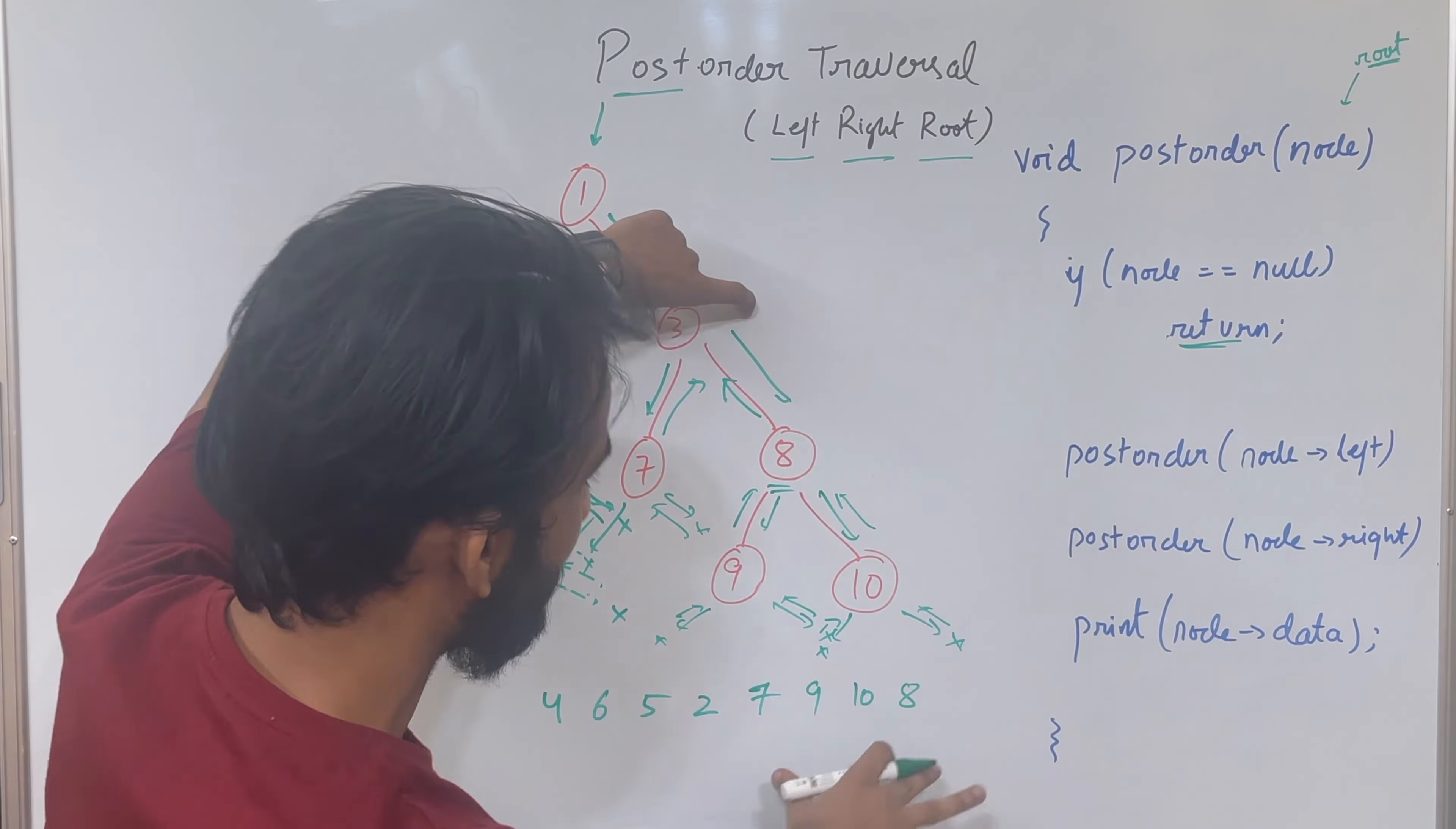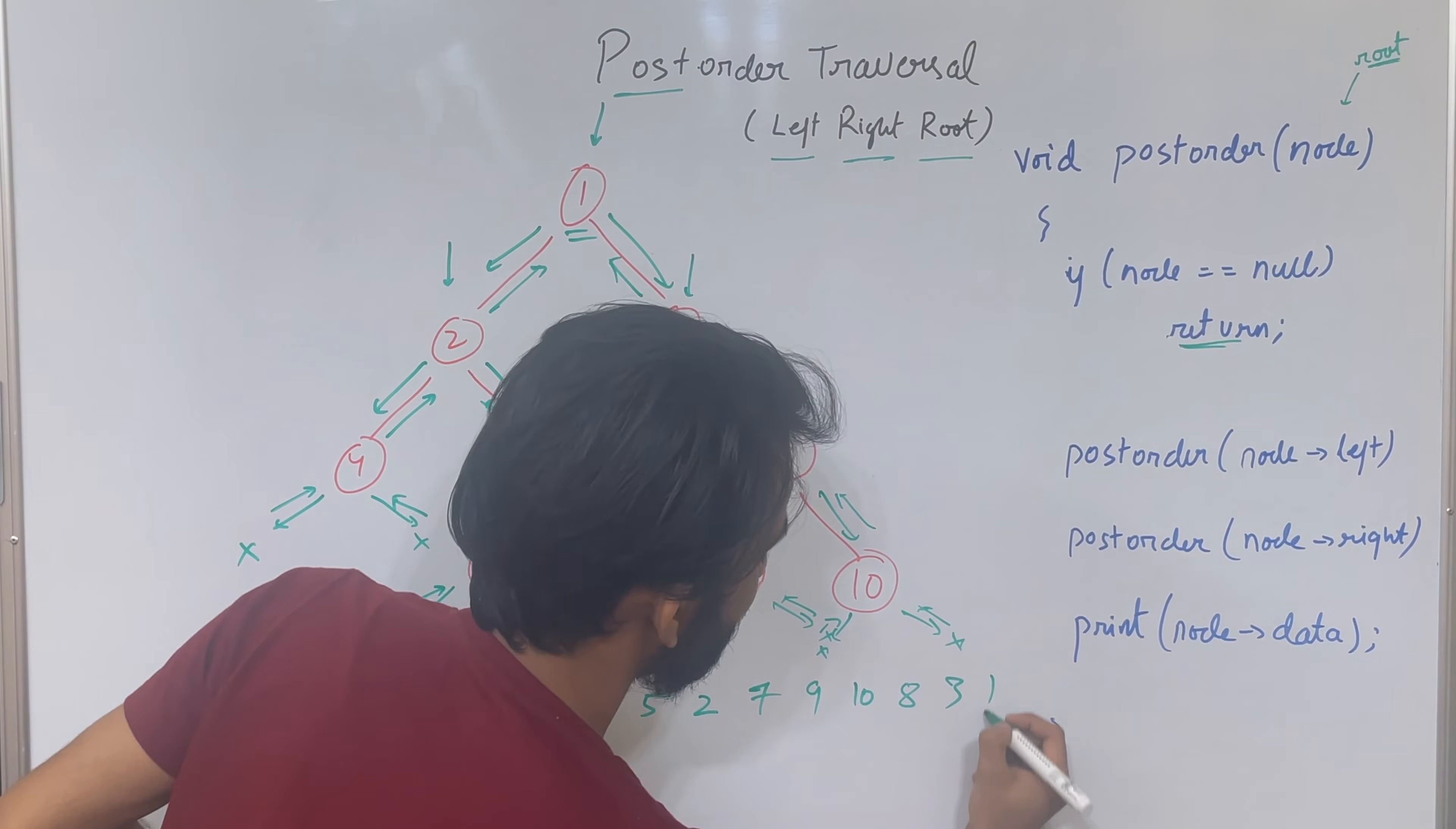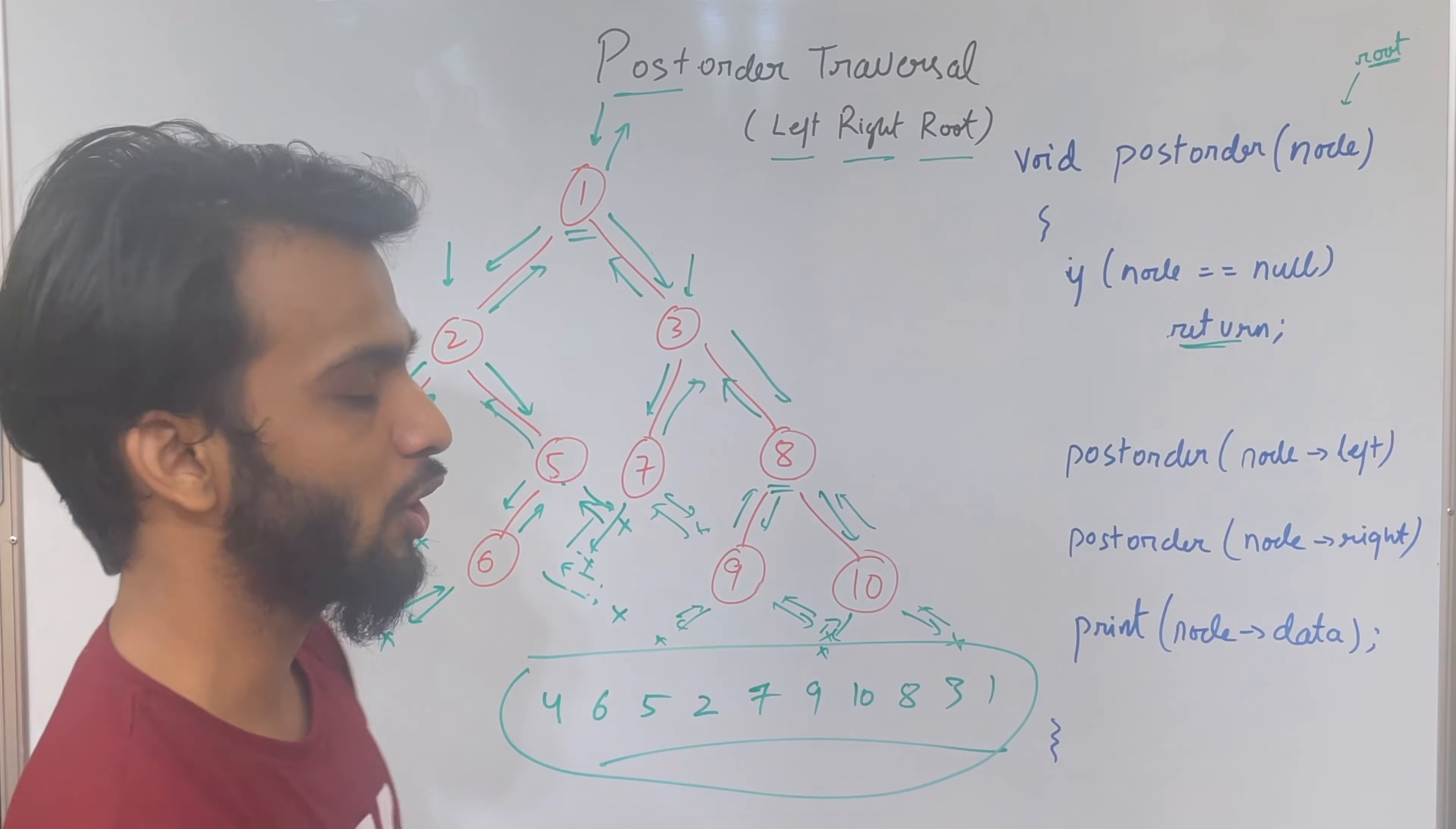So 3 says I've done my left, I've done my right, let's print 3. So 3 says I'm over, I'll go back. So 1 says I've done my left, I've done my right, it's time to print myself. So once you've done, you will go back. That's how the recursion will work and this is what the post-order traversal will be for this tree.